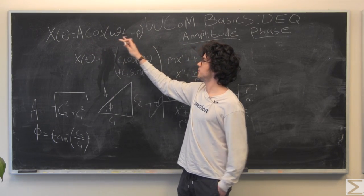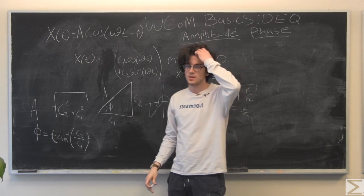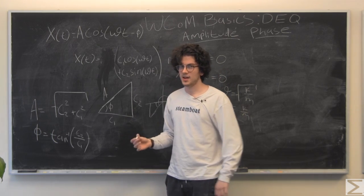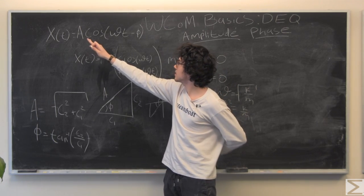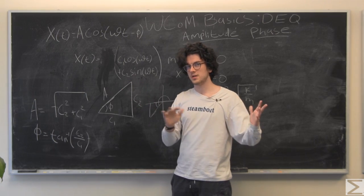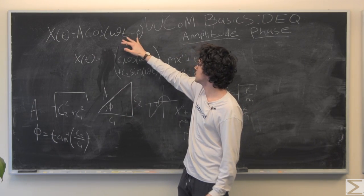We just have a cosine of omega t minus phi. So, not only is this easier to look at, it also tells us the amplitude of our oscillation and how much it has shifted based on this phi.